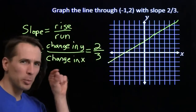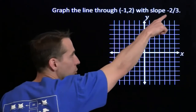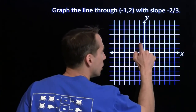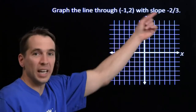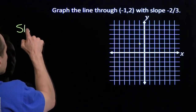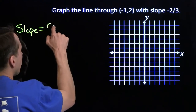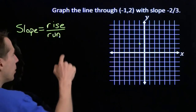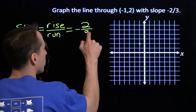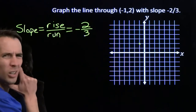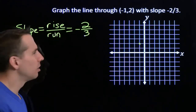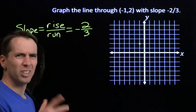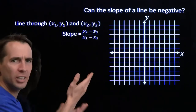Now I'm going to change this problem just a little bit — all I did was drop in a negative sign. We're starting at the same point, (-1, 2), but now the slope is negative 2/3. Let's see how that changes the line. Can a line even have a negative slope? Let's think about how a line could possibly have a negative slope, and then we'll go back to graphing that other line if we can.